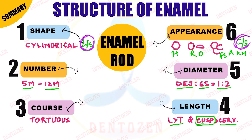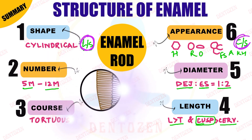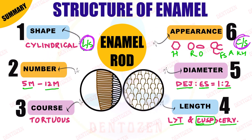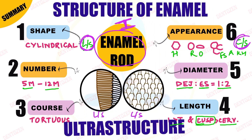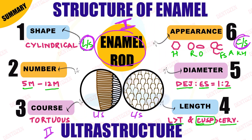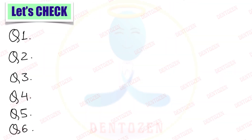We can draw two diagrams: the longitudinal section and the cross section of enamel. That is all about the first part of the structure of enamel — enamel rods. In the upcoming video, we are going to talk about the second part: the ultrastructure of the enamel rods. Don't forget to watch that video.